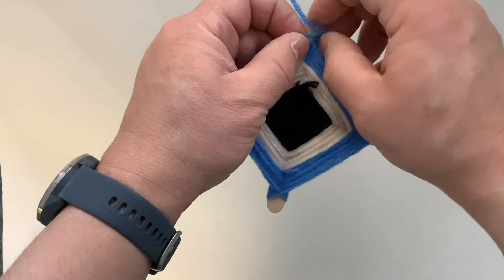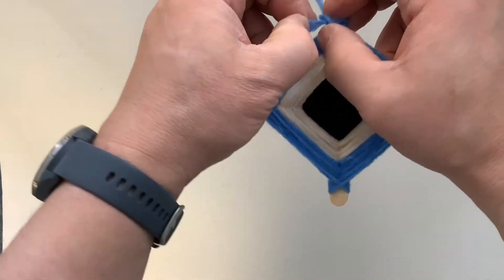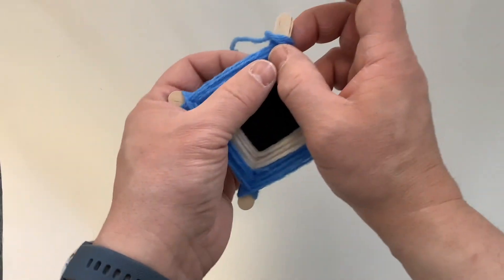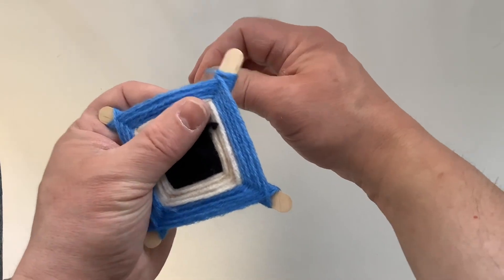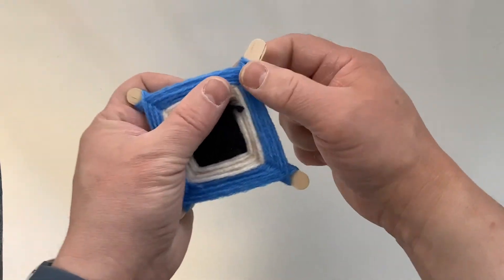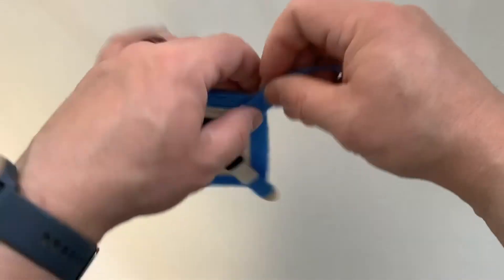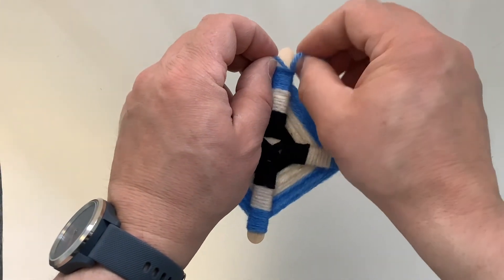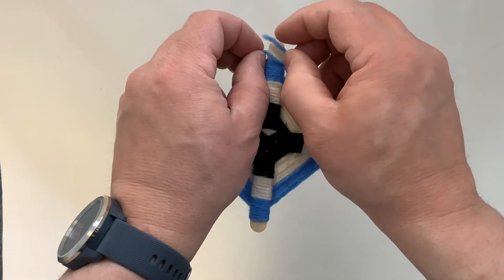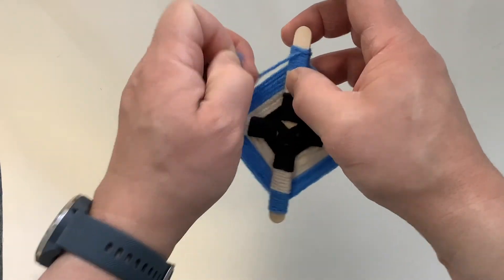And sort of loop it in, tie a little knot off. And then you can trim that end off if you want, after you pull it tight. Tie it a second time on the back if you want to. And then your God's eye weaving will be finished.